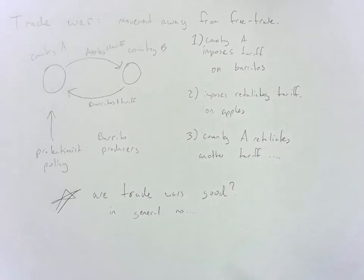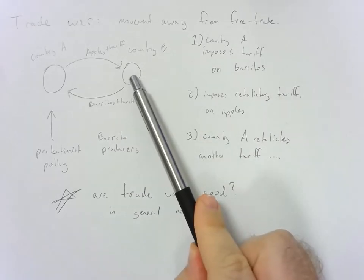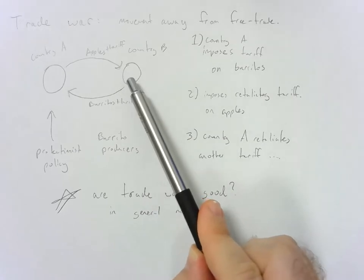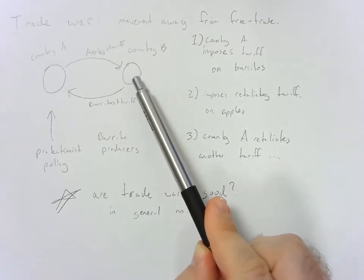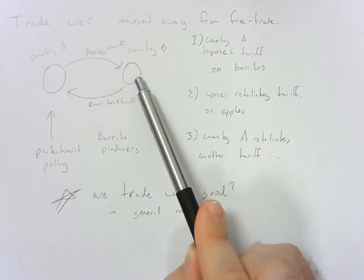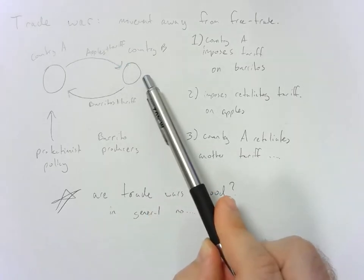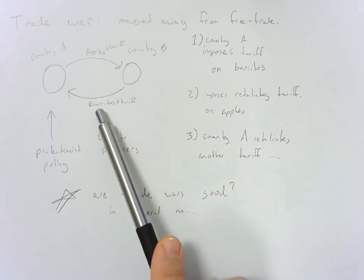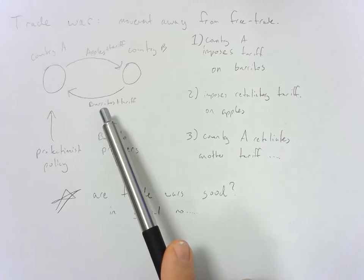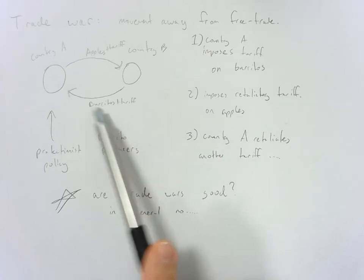There are specific situations, like if you're an apple producer in country B, you like this trade war because now you get to sell your apples at a higher price. But everybody who doesn't sell apples in country B is going to be worse off, specifically the burrito producers. They're not going to be able to sell nearly as many burritos, so they're going to lose a lot from this trade war.